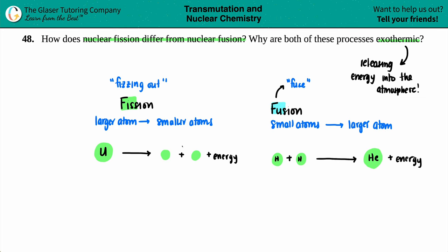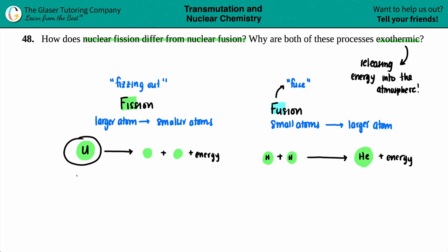Just know that exothermic always means that your energy is going to be on the product side. But this goes back to Albert Einstein's theory of relativity, E equals MC squared, where if there is a change in mass, where does that mass go? It doesn't just disappear. The mass has to be accounted for somehow. It turns out that in real life, life isn't perfect.